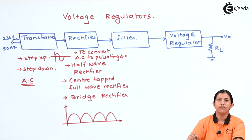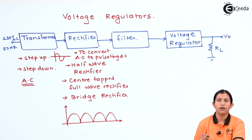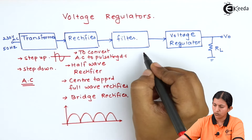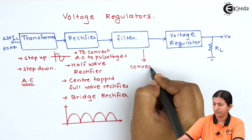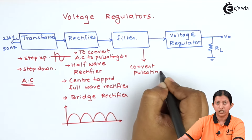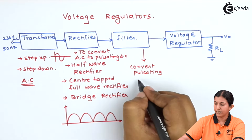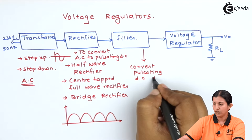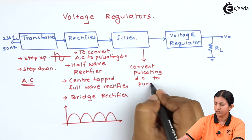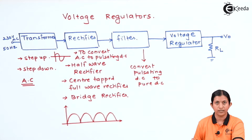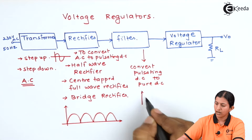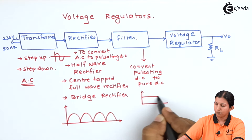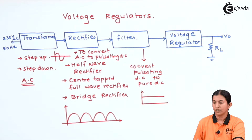The function of the filter is to remove the pulsating signal, converting pulsating DC to pure DC. Hence we get the output as a pure DC signal.